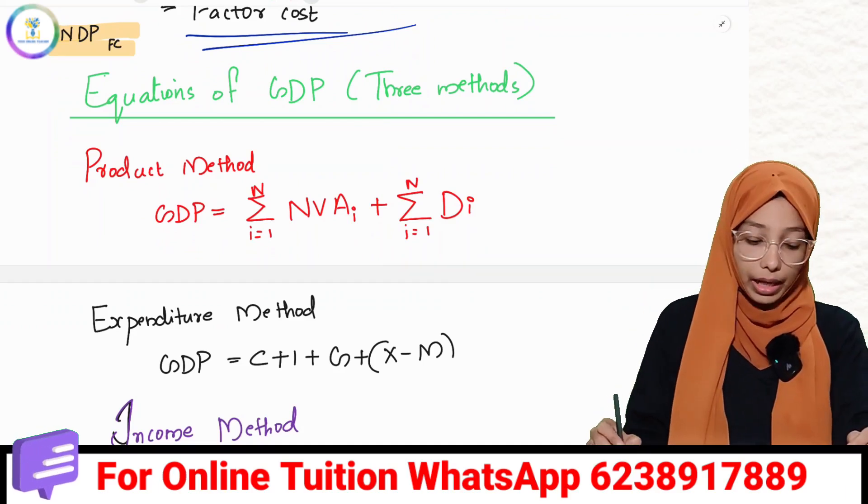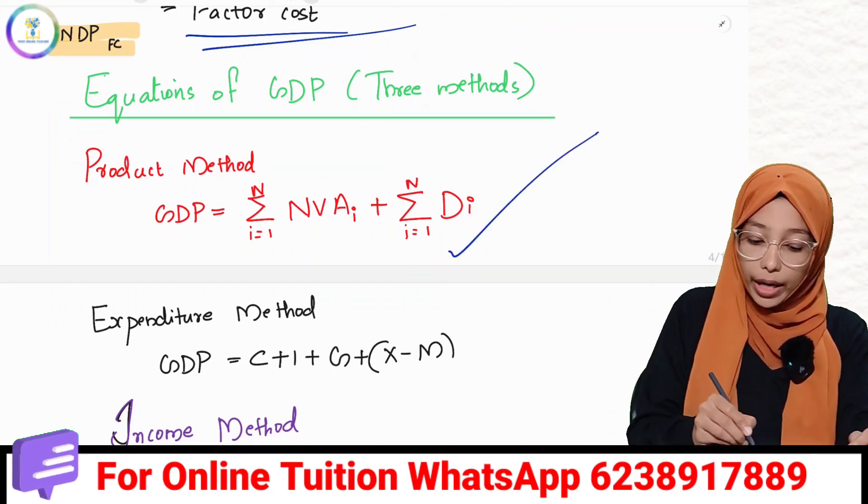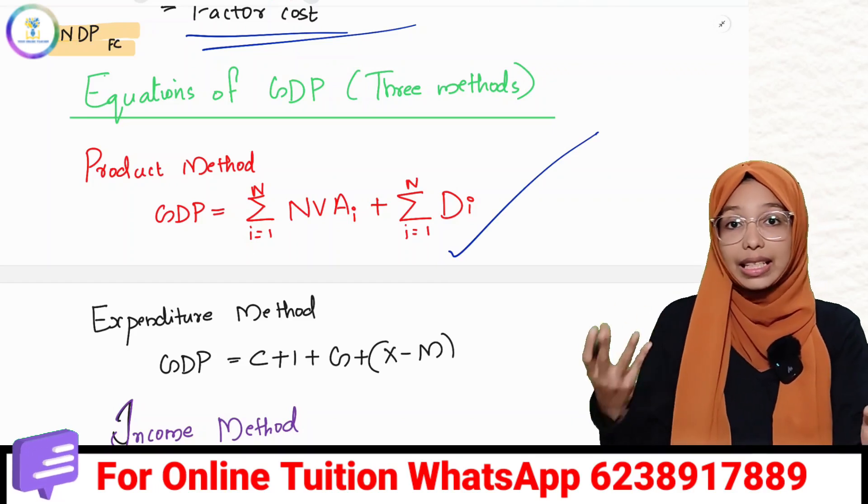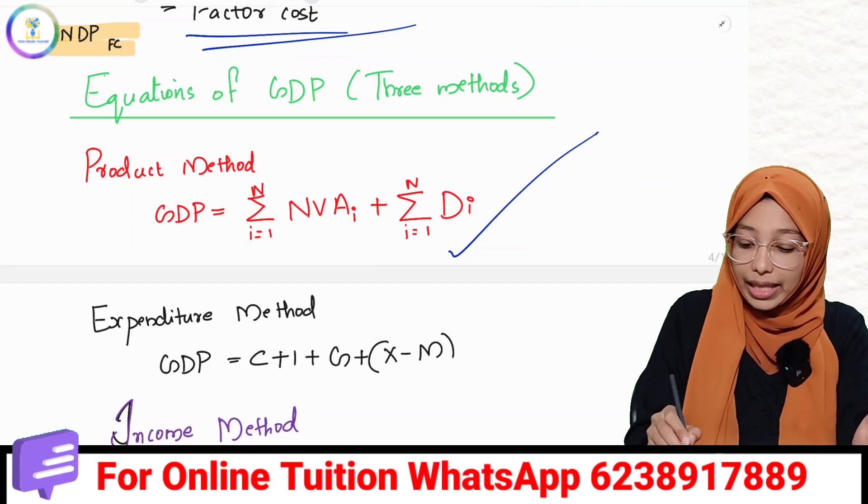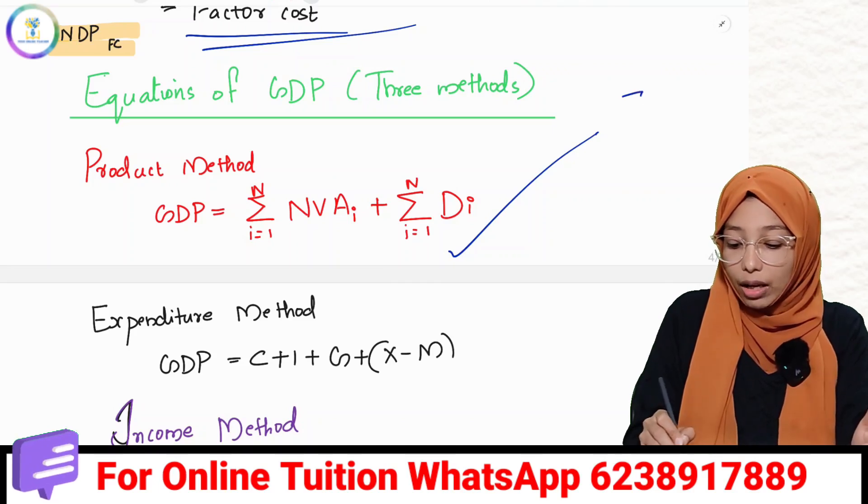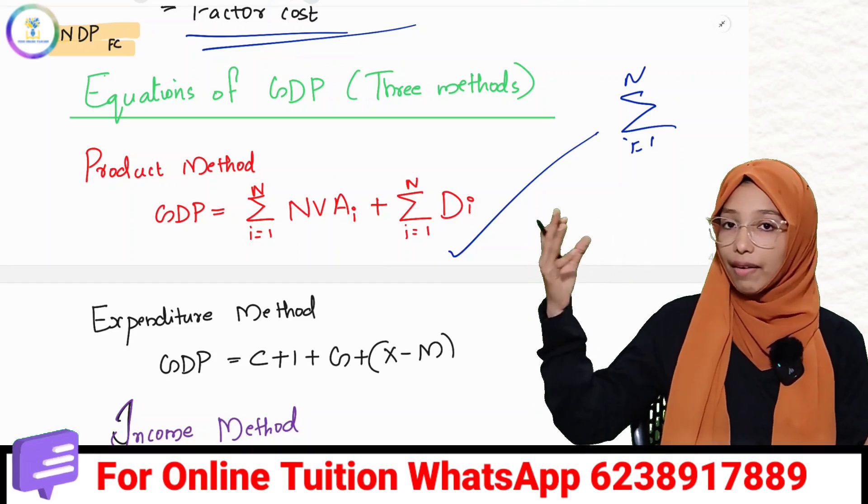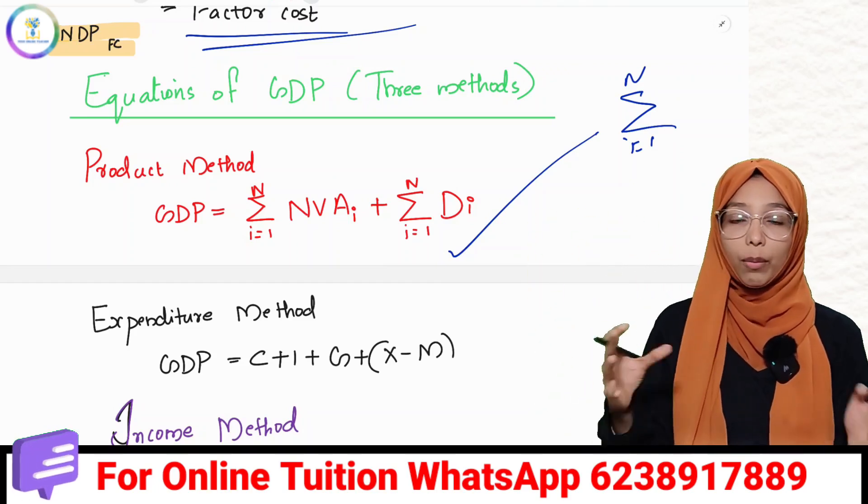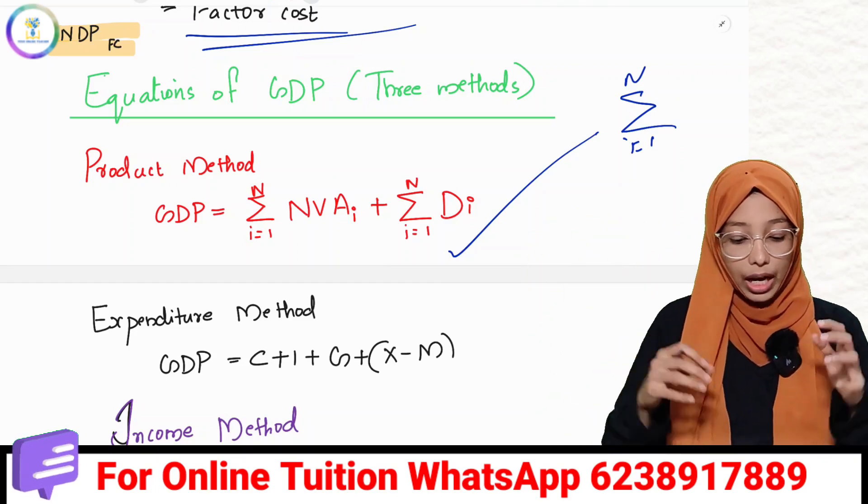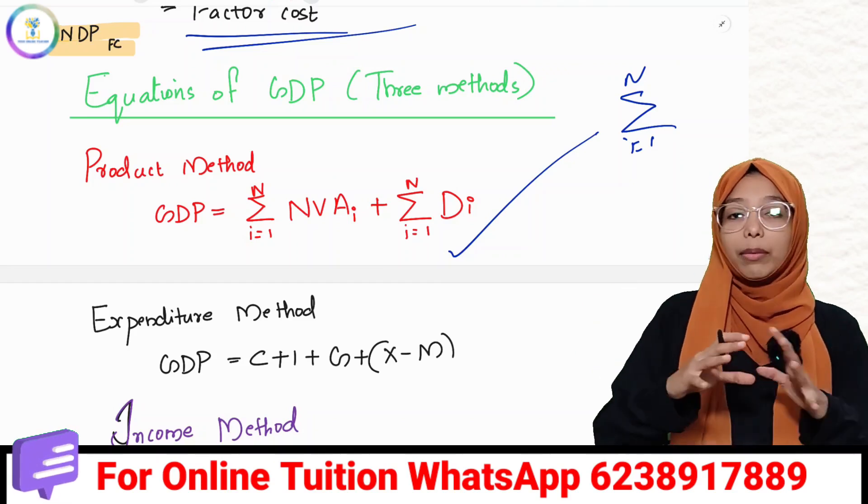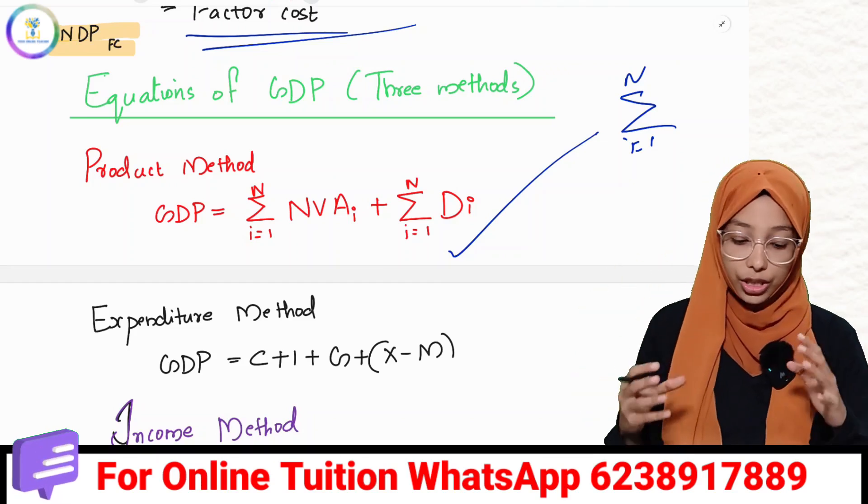GDP by the product method: GDP equals sigma i equals 1 to n, NVA i, plus sigma i equals 1 to n, Di. Sigma is summation, i equals 1 to n. If there are three firms, it's three firms' NVA i and three firms' depreciation.